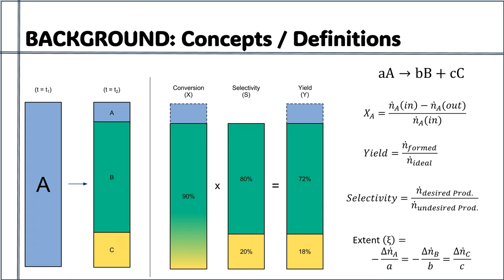You may also encounter the term extent of reaction while simulating reactor models. Extent of reaction is a homogeneous term for all reactants and products involved in a given reaction. It is defined as the number of moles formed or consumed divided by the stoichiometric coefficient of the respective reactant or product, and this number remains the same regardless of whether you discuss a reactant or a product.